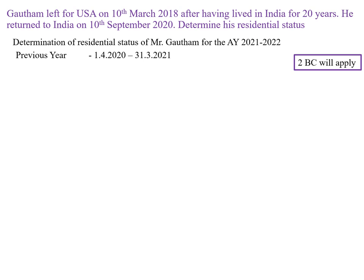After deciding that, we have to calculate the period of stay during the previous year. For calculating the period of stay, you start with the first date given in the question. In this problem, the first date is 10th March 2018. You check whether this date falls within this previous year. Here, 2018 does not come within our previous year, so we move on to the next date. The next date is 10th September 2020. This date will come within the previous year, so we are writing it in the rough column.